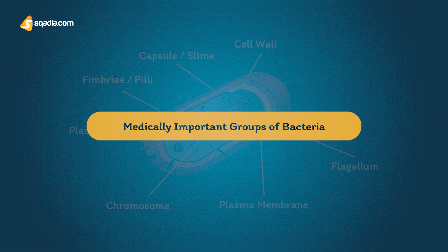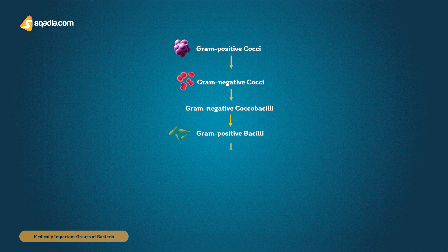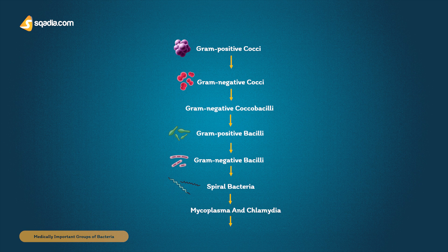These include gram positive and negative cocci, gram negative coccobacilli, gram positive and negative bacilli, spiral bacteria, mycoplasma, chlamydia, and rickettsia.